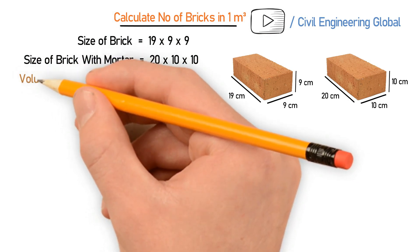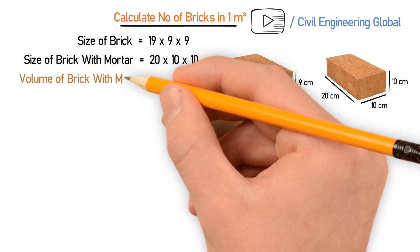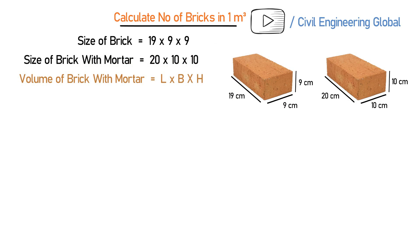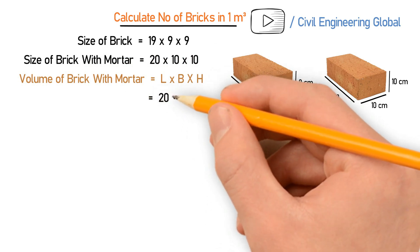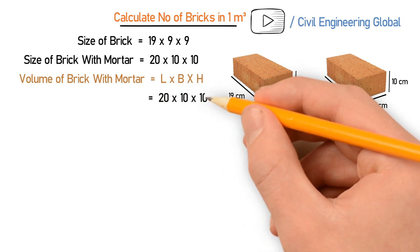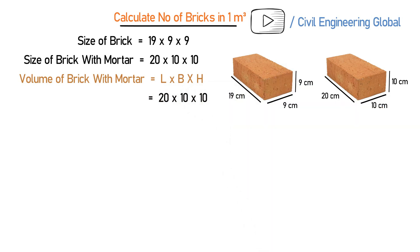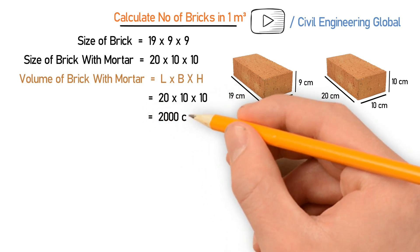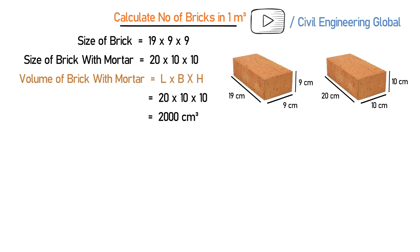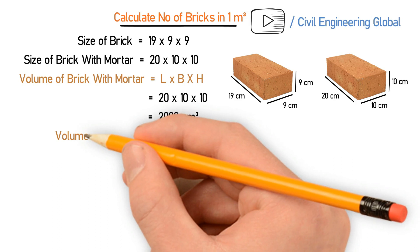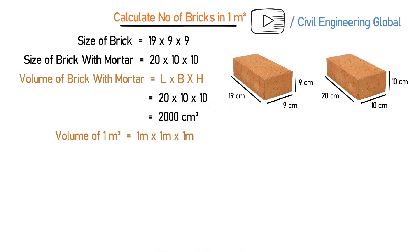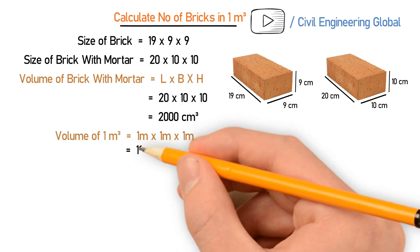So let's find out the volume of a brick with mortar. For this we have the formula: length × breadth × height. After putting in the values, we get 20 × 10 × 10, which gives a value of 2000 centimeter cube. So this is the volume of a brick with mortar.